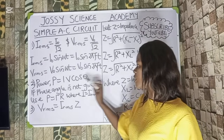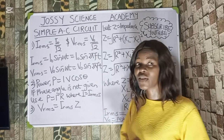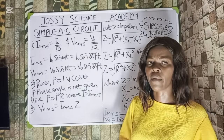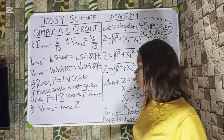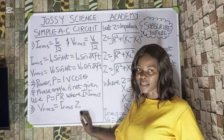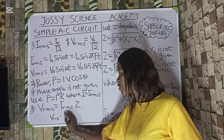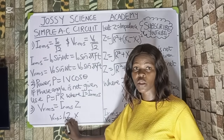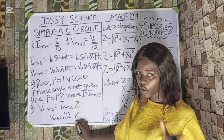V_RMS equals I_RMS multiplied by Z — following Ohm's law, the RMS values must be consistent with each other. Z is impedance, which is the overall resistance of a circuit containing a resistor, inductor, and capacitor. When all three are connected in series, the effective impedance is Z equals root of R² plus (X_L minus X_C)². If only resistor and inductor are present, Z equals root of R² plus X_L². If X_L is not given, Z equals root of R² plus X_C².